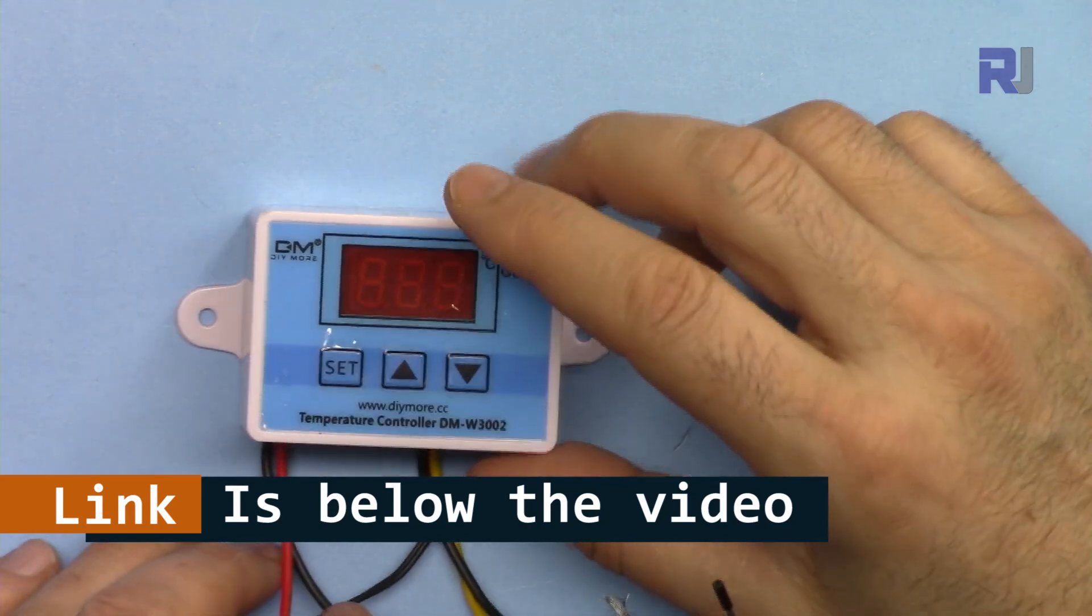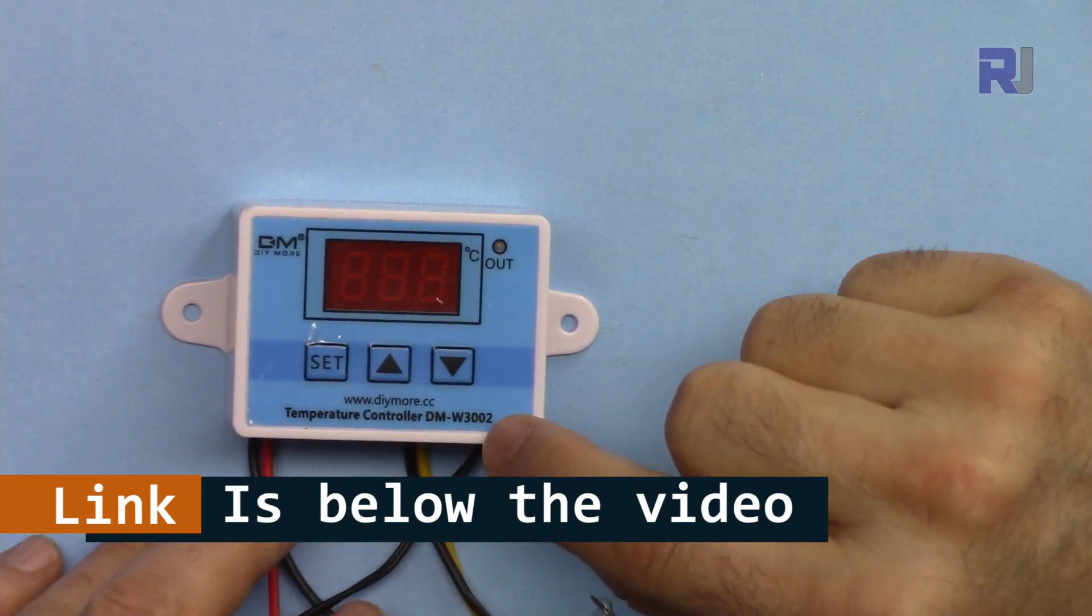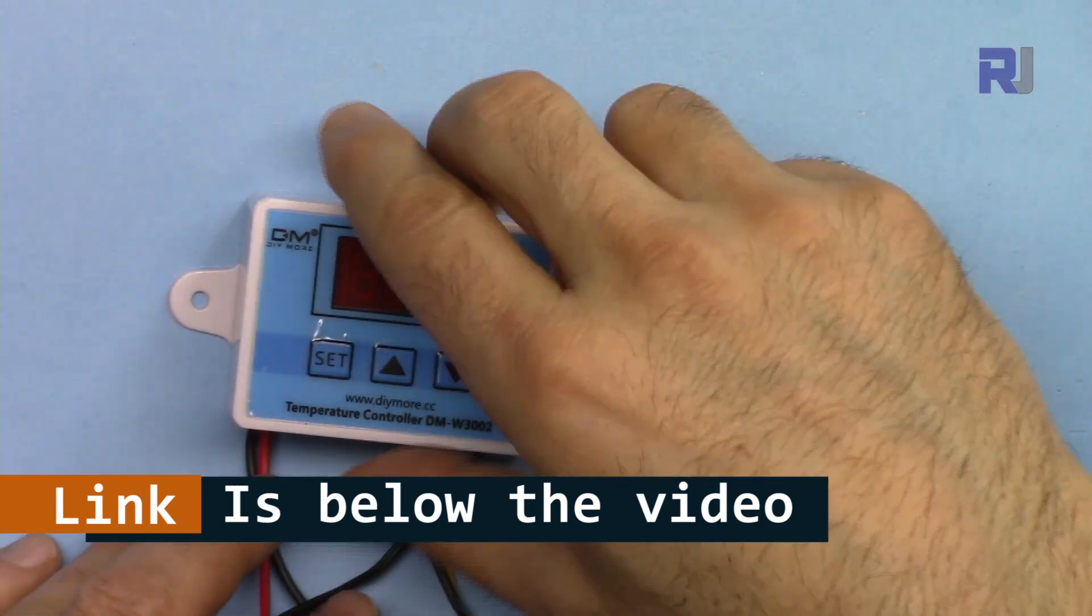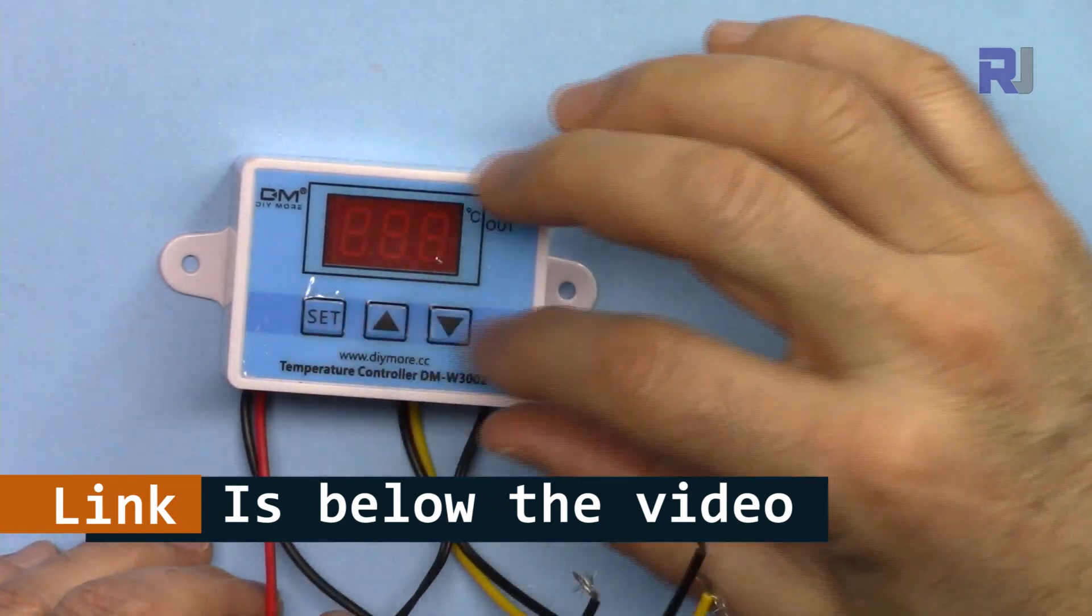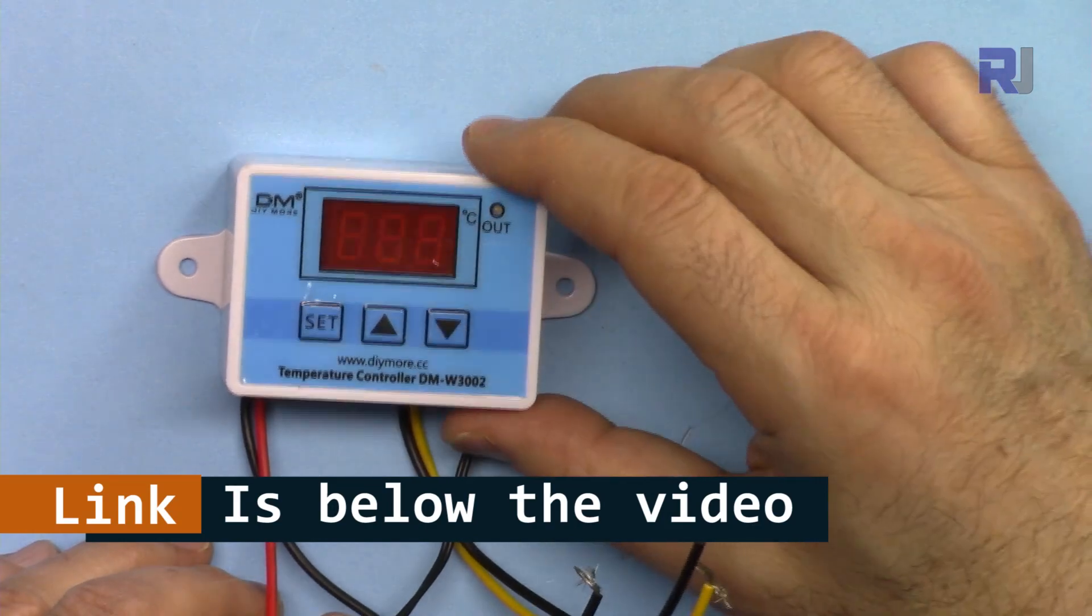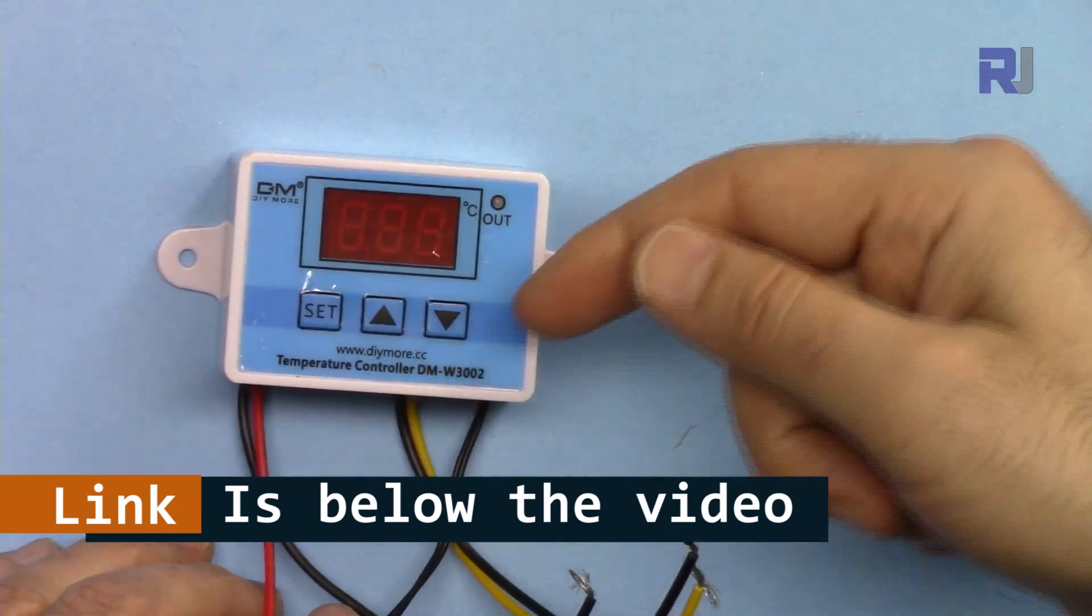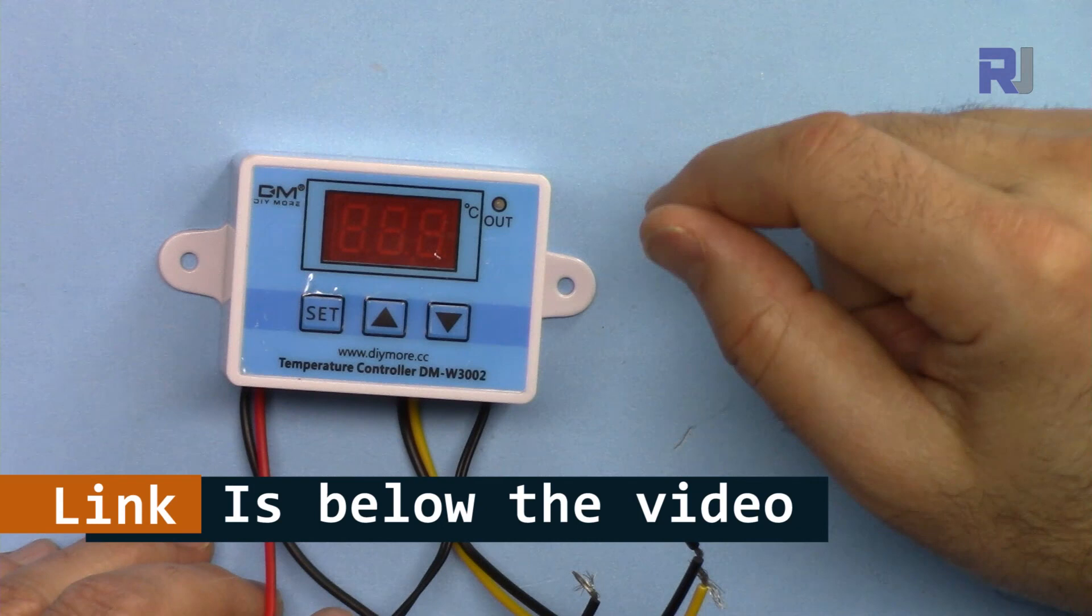This video is about the W3002 DC version which is 12 or 24 volts, but I also have a separate video showing you how to use the 120 or 220 volts version. The link for that video is below this video in the description.